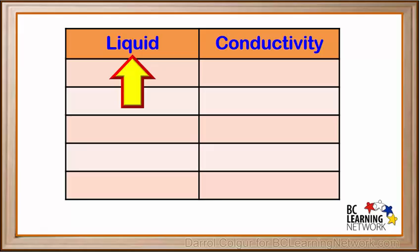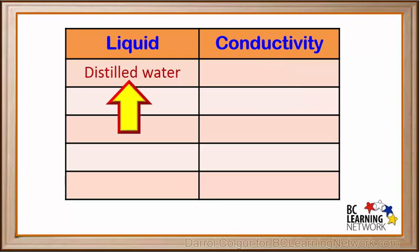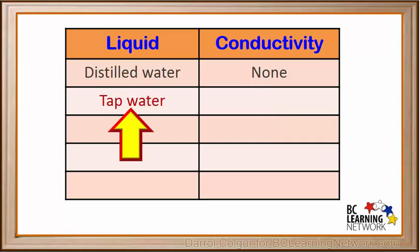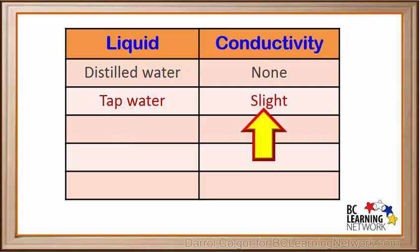We've created a table to record our results. In the left column, we'll name the liquid or solution, and in the right column, we'll note the conductivity of each. The distilled water has no conductivity — it's a non-conductor. Tap water was in the beaker on the right; the flashlight lit up a little bit, so its conductivity was slight.